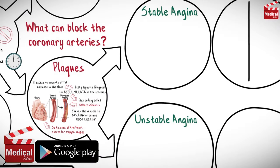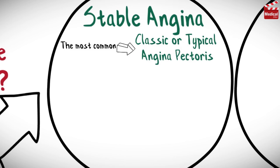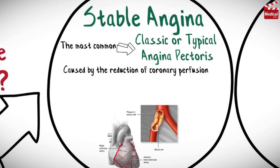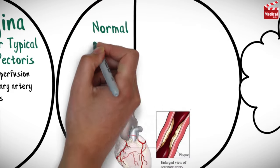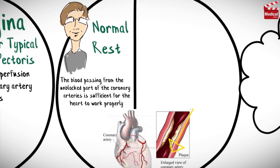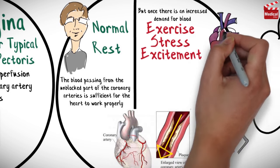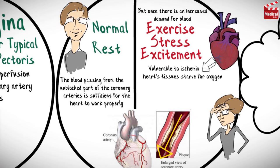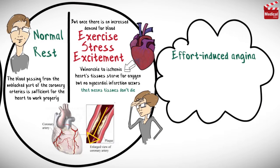Stable angina is the most common form, also called classic or typical angina pectoris. It is caused by a fixed obstruction of a coronary artery due to atherosclerosis. At rest, blood flow through the unblocked portion is sufficient, but during increased demand — such as exercise, stress, or excitement — the heart becomes vulnerable to ischemia. No myocardial infarction occurs and tissues don't die, which is why it is also called effort-induced angina. It is promptly relieved by rest or nitroglycerin.